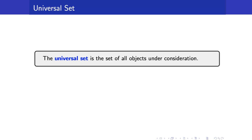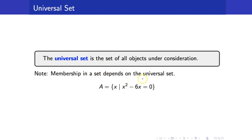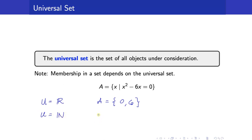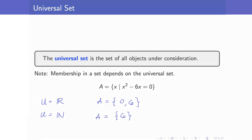Next, we will discuss the universal set. The universal set is the set of all objects under consideration. Take note that membership in a set depends on the universal set. For example, let A be the set of all x such that x² − 6x = 0. If our universal set U is all real numbers, then A in roster notation is {0, 6}. However, if U is just the set of all natural numbers, then A equals {6}. That is why it is important to know your universal set.